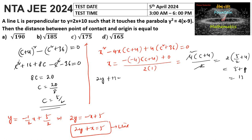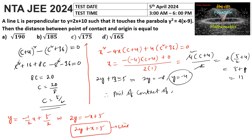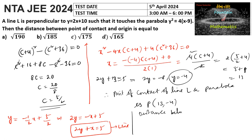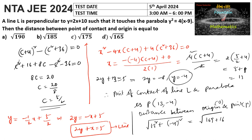Substituting x = 13 into 2y + 13 = 5 gives 2y = −8, so y = −4. Therefore the point of contact of line L and the parabola is P(13, −4). The distance from the origin to P is √(13² + (−4)²) = √(169 + 16) = √185. So the answer is √185, option B.